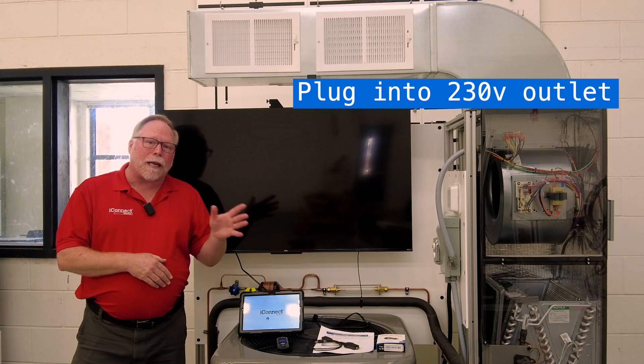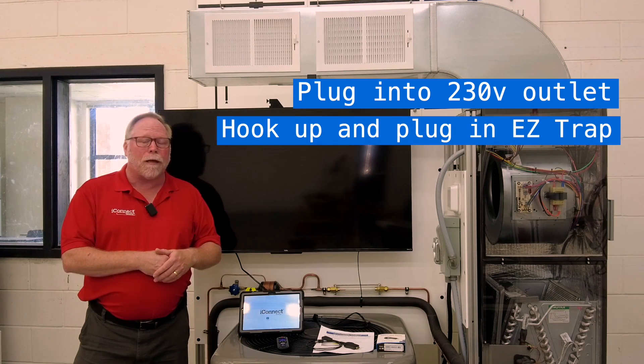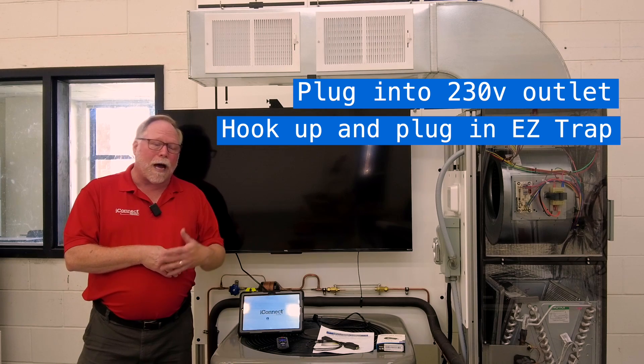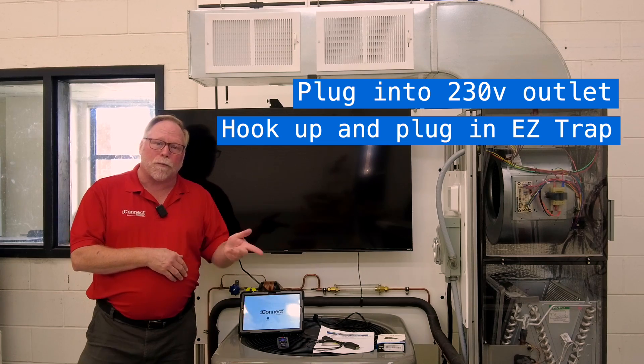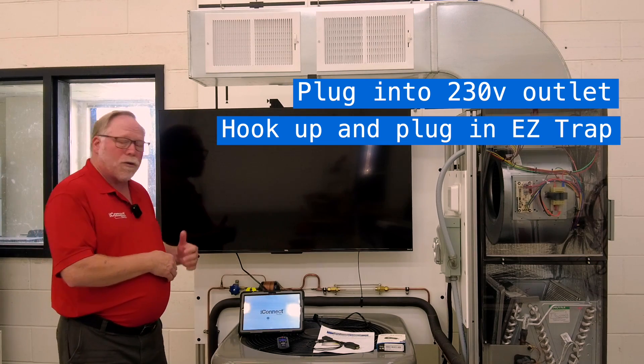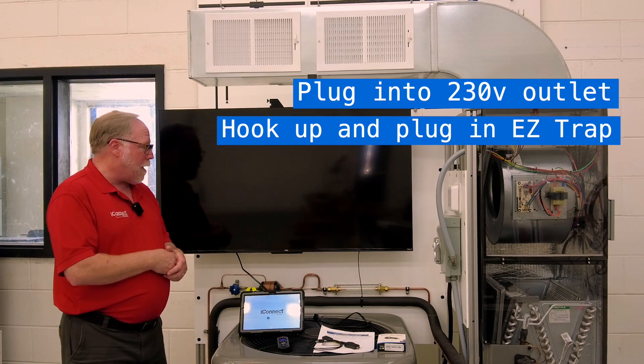Secondly, don't forget you've got an EasyTrap that comes with this unit, and you want to be sure that that's hooked up and it's plugged in, because if not, it'll be off on a safety. So make sure the EasyTrap is hooked up and the safety is plugged into it, and make sure that your 230 volt is also plugged into the equipment so that we can have our TV turned on.